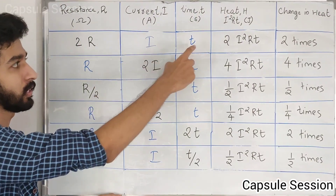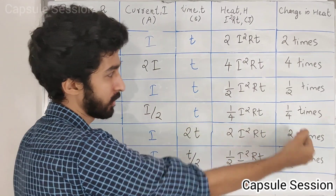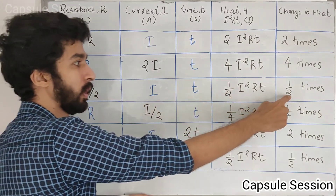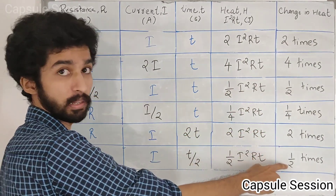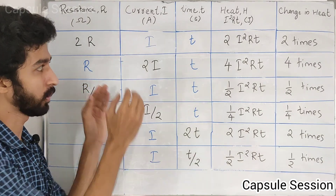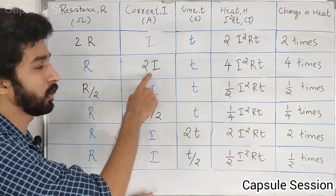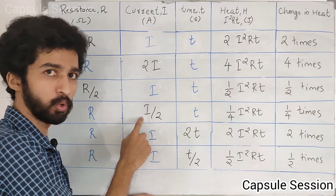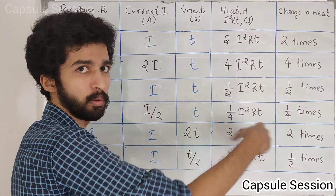We need to get the resistance and time values: what change is the same. Resistance 2 times, the answer is 2 times. Resistance half times, the answer is half. Time 2 times, the answer is 2 times. Time half times, the answer is half. Now, in the case of current, what change is the same — the answer is squared. So current 2 times, the answer is 4 times. Current half times, the answer is 1 by 4 times.